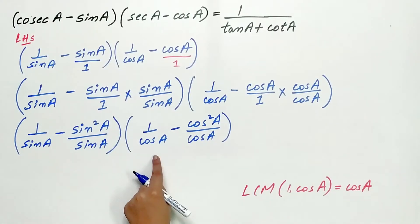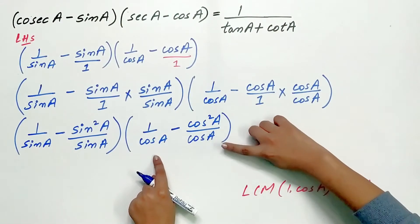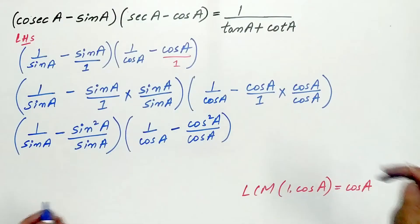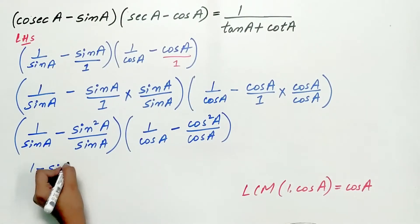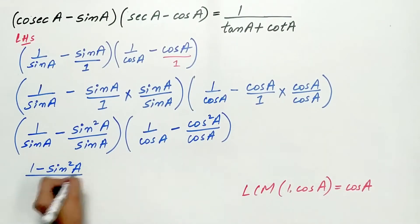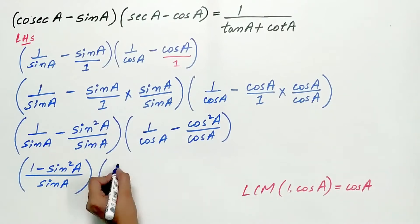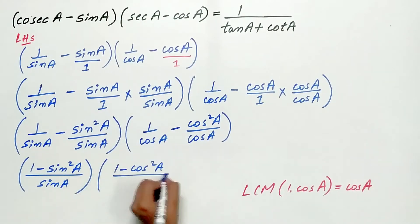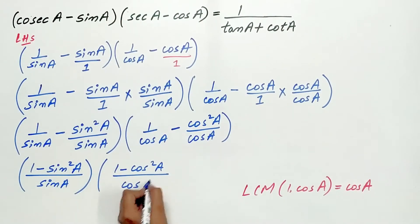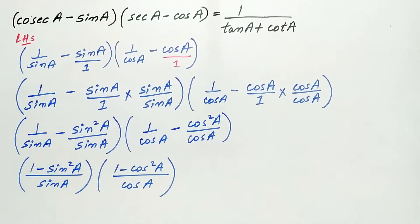Again I can easily subtract to get (1 - cos²A) by cos A. So our left hand side now reads: (1 - sin²A)/sin A multiplied by (1 - cos²A)/cos A.